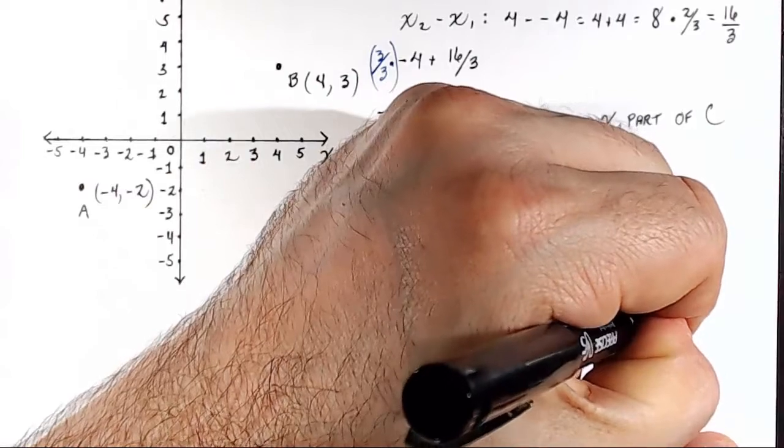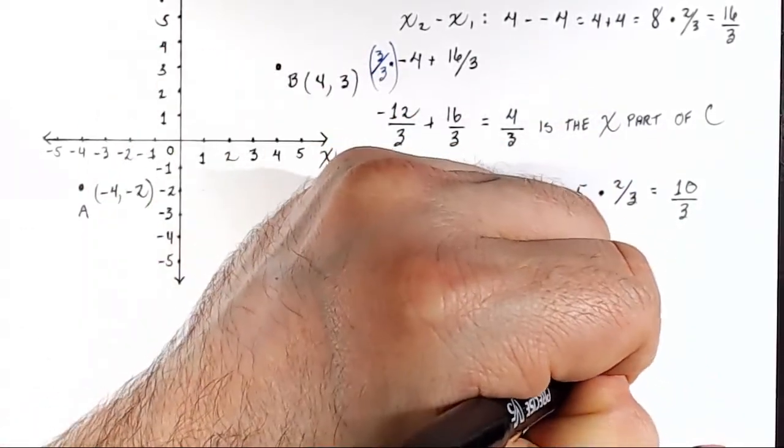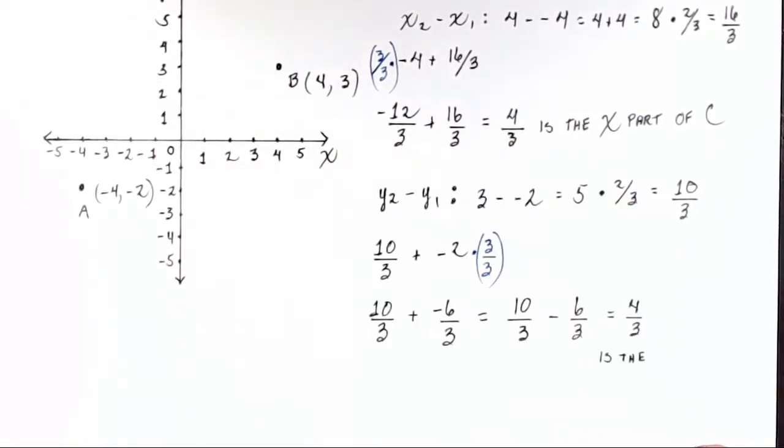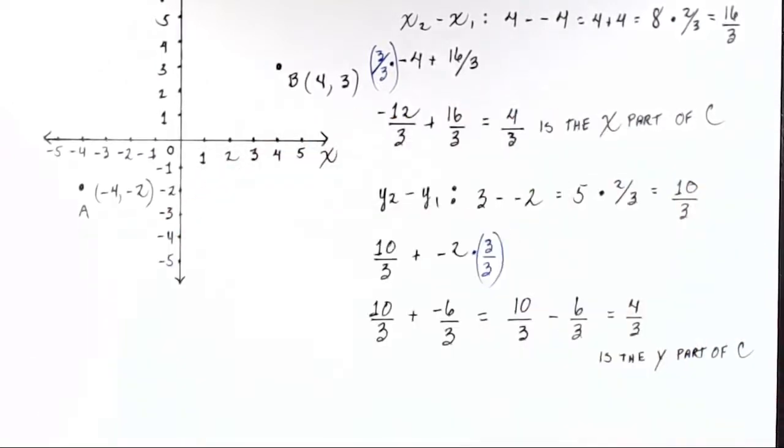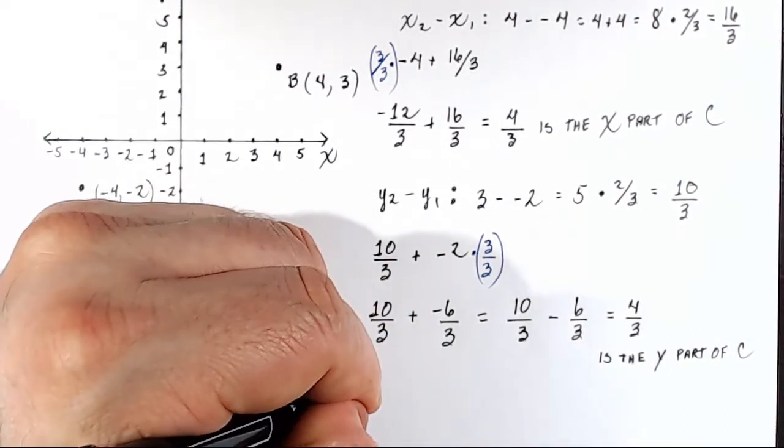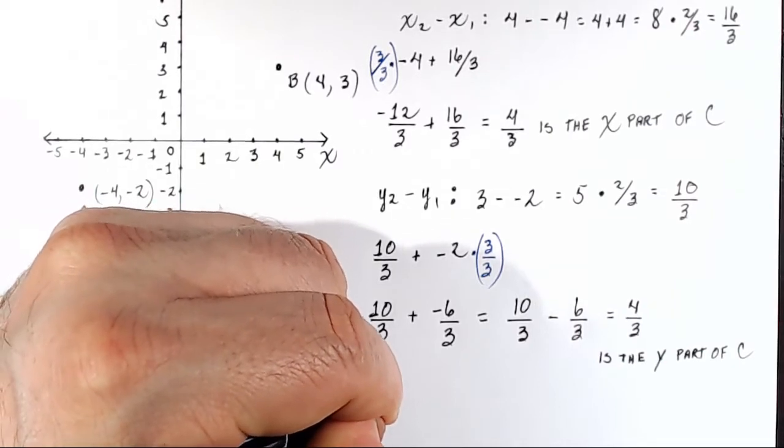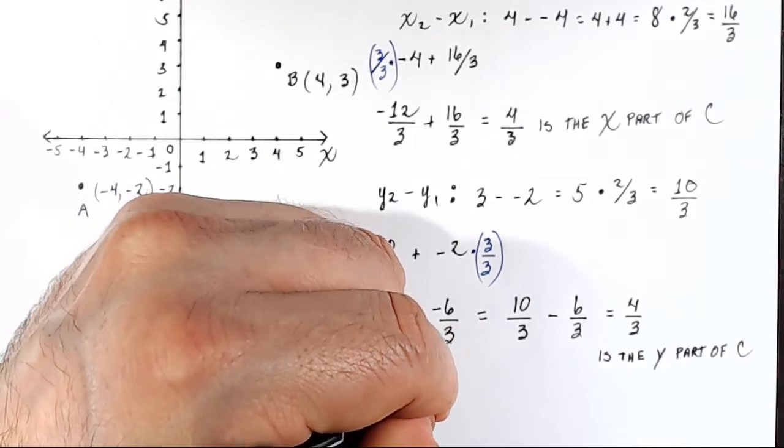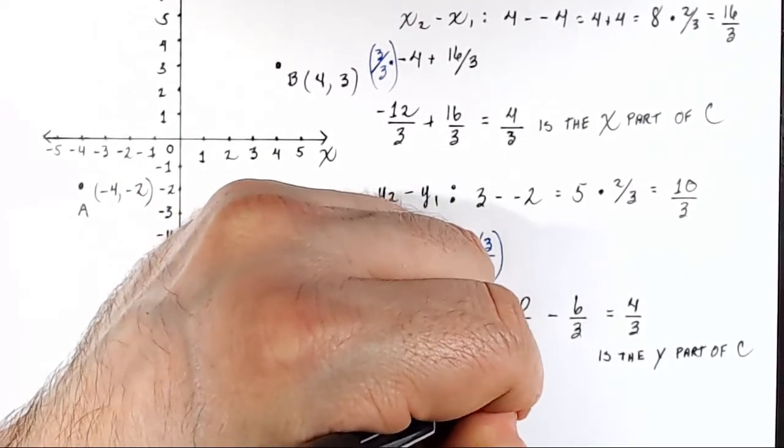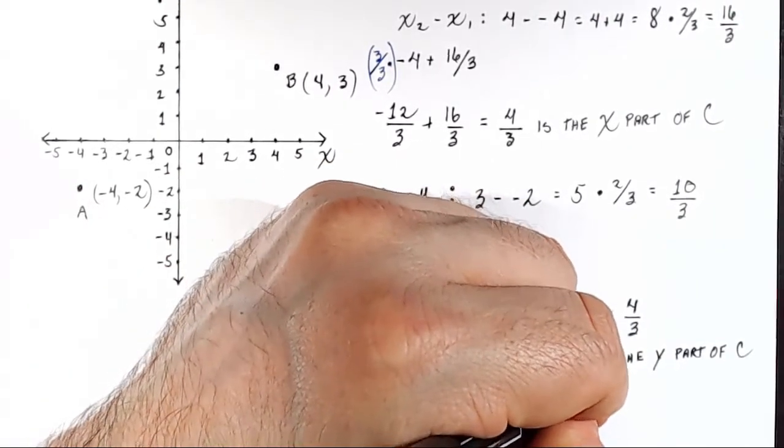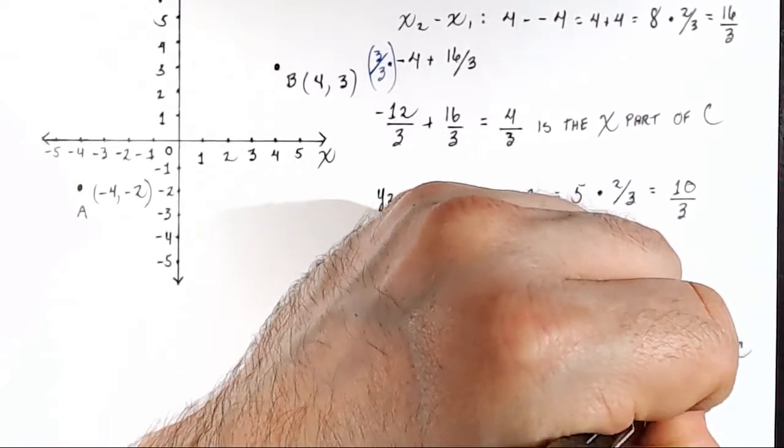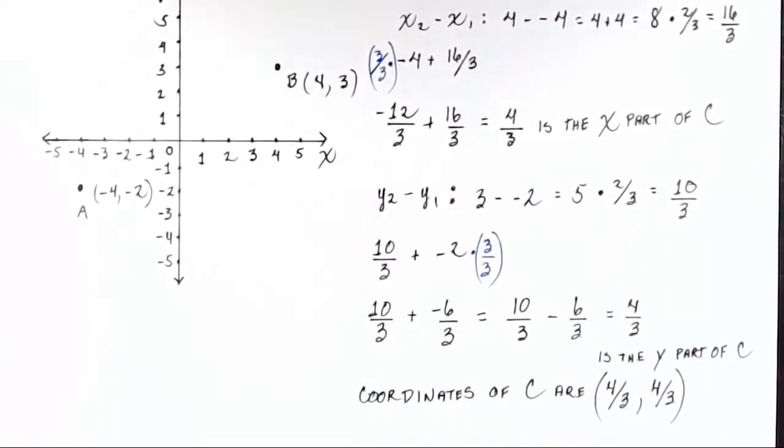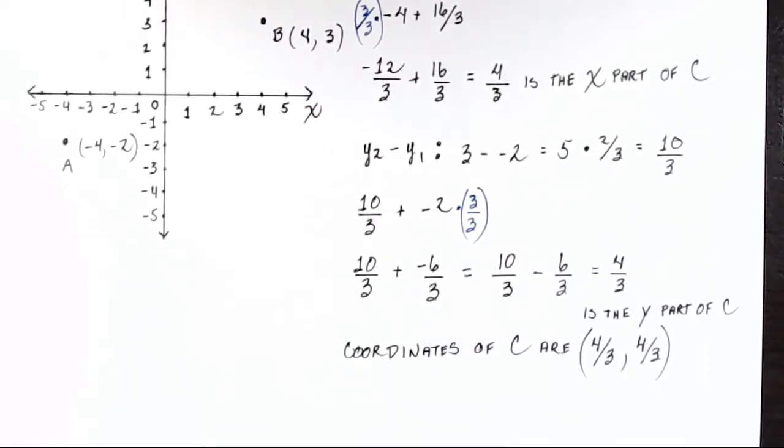And 4 thirds is the y part of C. So both of our x and our y parts are 4 thirds. So the coordinates, the coordinates of C are 4 thirds, comma 4 thirds. In other words, 1 and 1 third, comma 1 and 1 third.